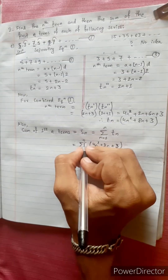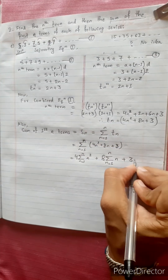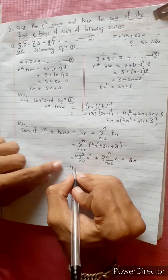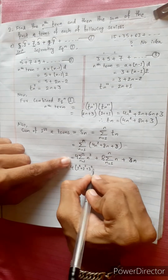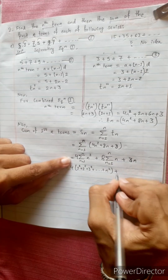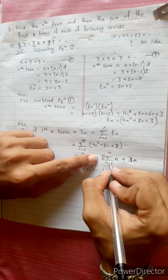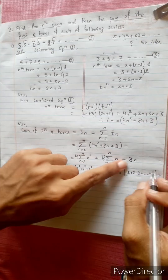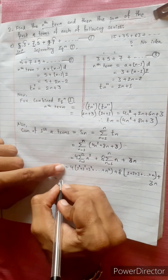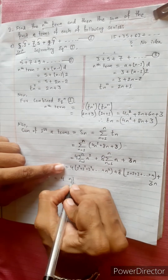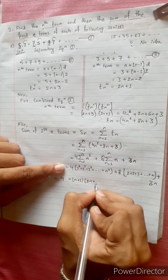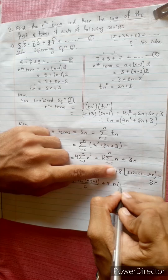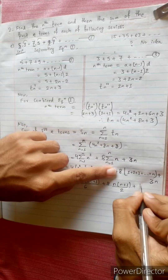Applying standard summation formulas: 4 times the sum of squares of first n natural numbers, which is n(n+1)(2n+1) divided by 6, plus 8 times the sum of first n natural numbers, which is n(n+1) divided by 2, plus 3n.